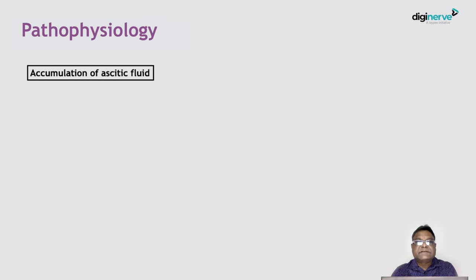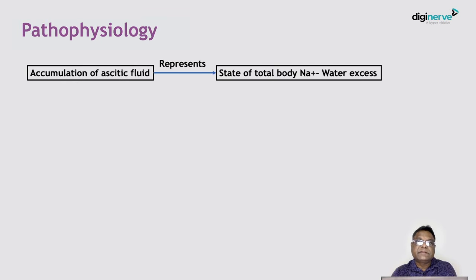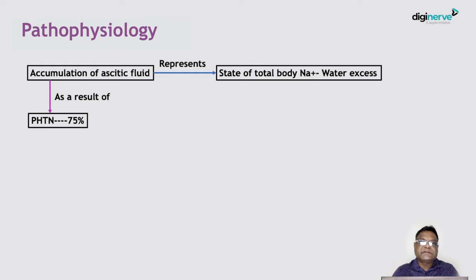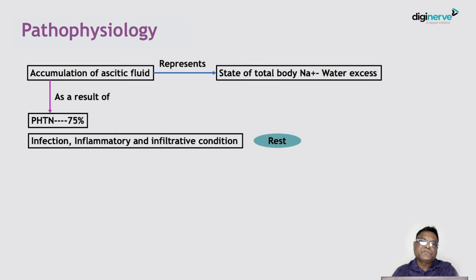From a pathophysiological perspective, ascites represents an accumulation of ascitic fluid, indicating a state of total sodium and water excess in the body. Most of the time, around 75% of cases, this fluid collection occurs because of portal hypertension. The remaining 25% of cases are due to other factors unrelated to portal hypertension — known as non-portal hypertension-related ascites — commonly because of infection, inflammatory conditions, or infiltrative conditions like malignancy.